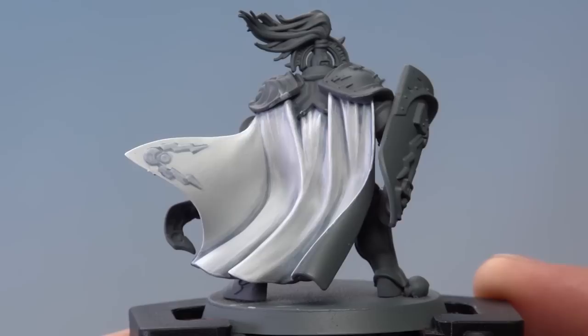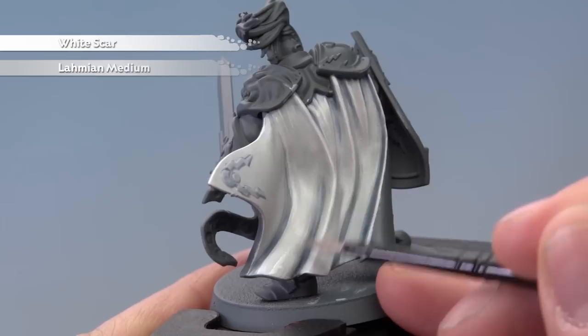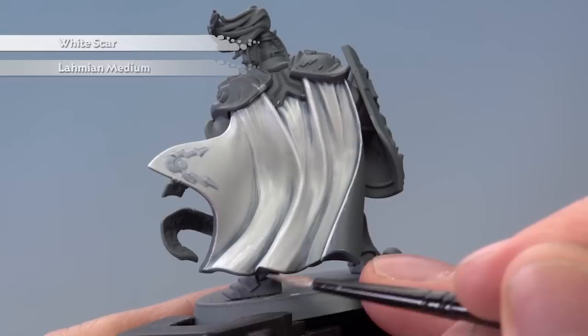And finally we're now ready to glaze over the cloak using a mix of White Scar and Lahmian Medium. Same combination as what we did earlier with The Fang, and what I'm going to do here is apply it to the flatter smoother areas like this, a very thin coat you see like this going around those highlights. And what this does is just gives us a nice soft white on these raised areas.